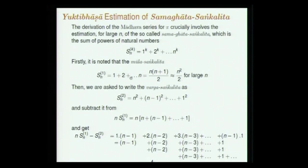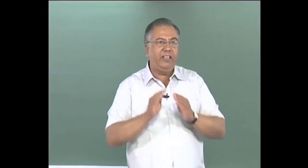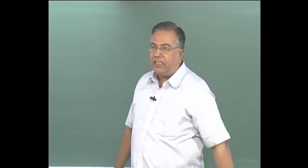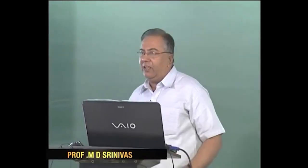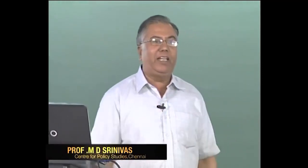It is noted that the sum of first powers is Aryabhata's exact result n(n+1)/2. For large n, you can neglect the n/2 term and say this goes like n²/2. This careful separation of orders — as n becomes large, identifying the significant term in 1/n and what terms can be neglected — is where the heart of this limiting operation comes.